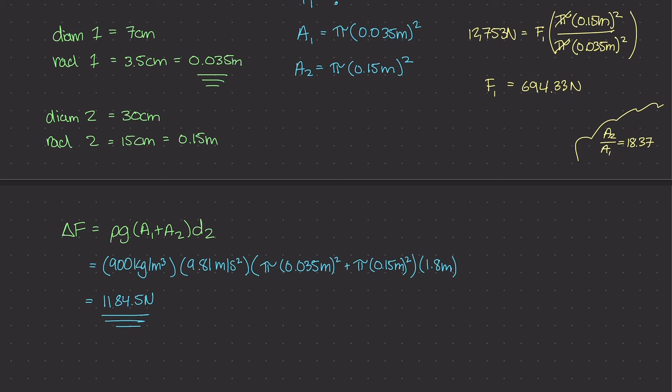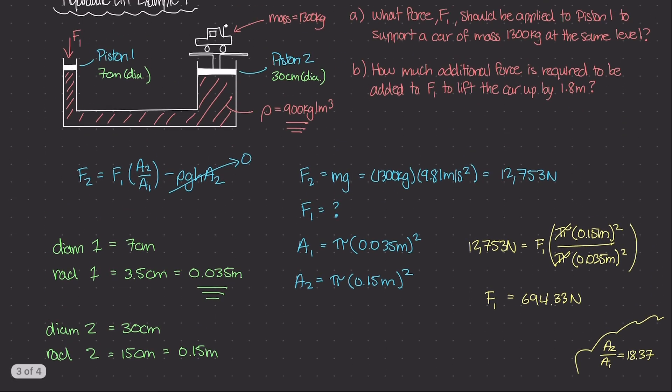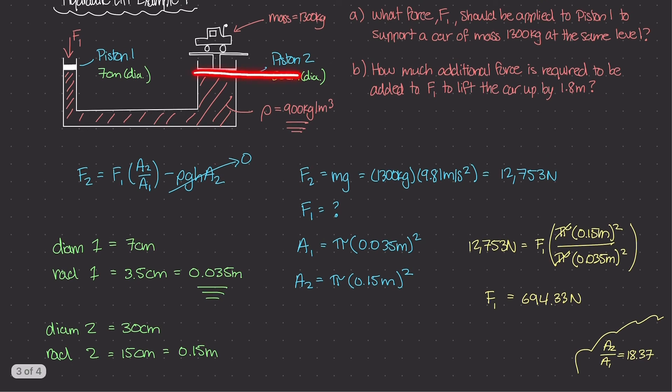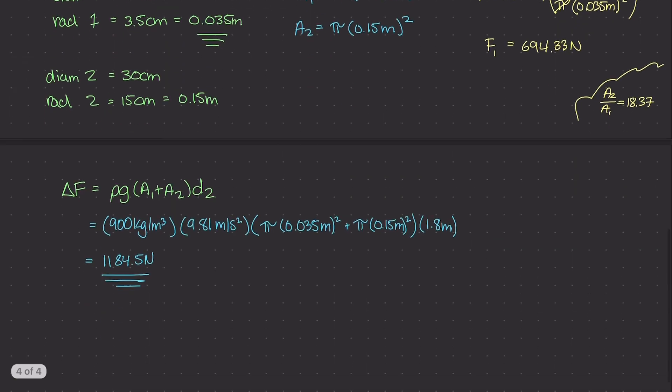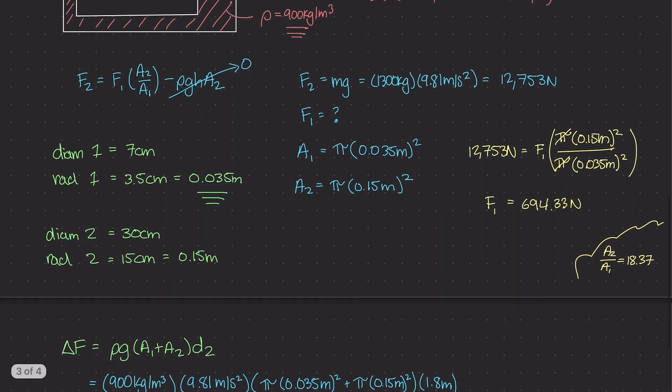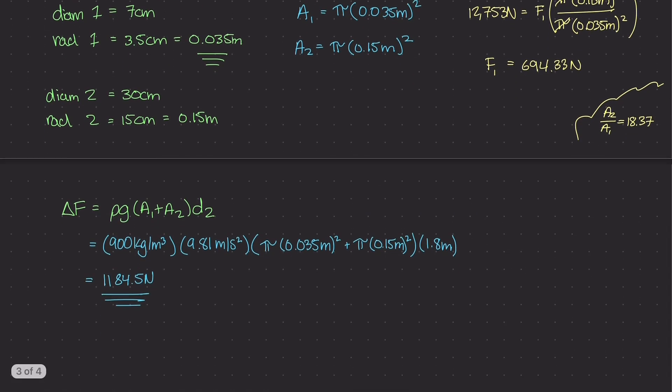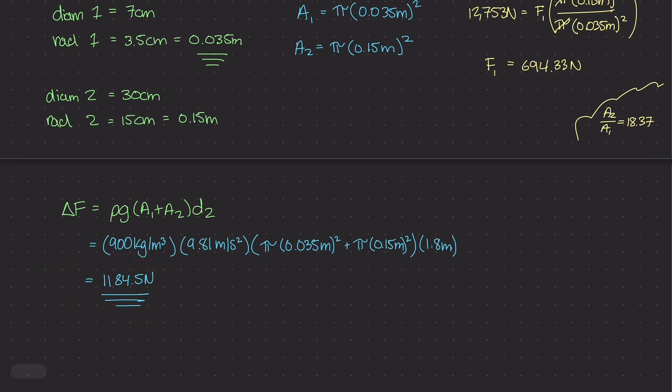And remember, again, this is the additional force. So if we were to go back up to this hydraulic lift and we said, hey, we wanted to move piston 2, this is the original location of piston 2, and we wanted to move it up by a distance of 1.8 meters, then the additional force that we have to add to F1 is this 1184 newtons. So really the total force being applied to piston 1 is this 1184 newtons and this F1 force of 694 newtons that we found out in the last video.